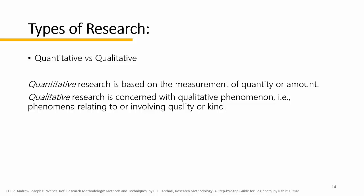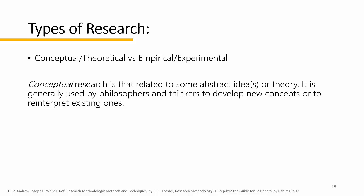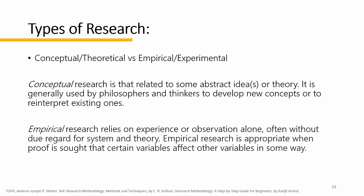Other types of research include conceptual or theoretical versus empirical or experimental. Conceptual research is related to some abstract ideas or theory and is generally used by philosophers and thinkers to develop new concepts or to reinterpret existing ones. On the other hand, empirical research relies on experience or observation alone. Empirical research is appropriate when proof is sought that certain variables affect other variables in some way — somewhat like analytical or explanatory research.